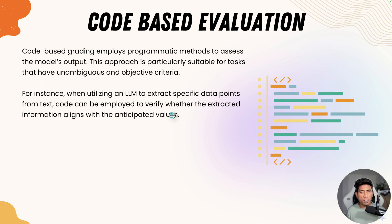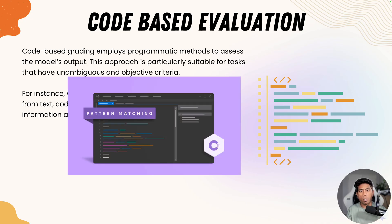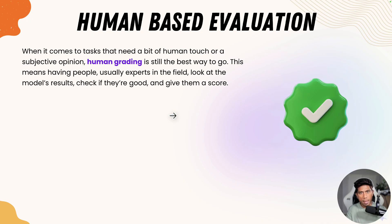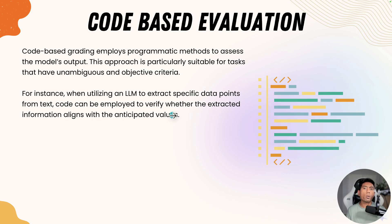The next approach is code-based evaluation. In code-based grading, we employ programmatic methods to assess the model's output. This approach is particularly suitable for verifying repetitive tasks as quickly as possible. However, code-based evaluation will just check similarities of the responses from the large language model against your golden answers — things like pattern matching, regular expression matching, or string comparison. So while human evaluation requires manually verifying everything, code-based evaluation lets a program do it for you — much like automation testing.